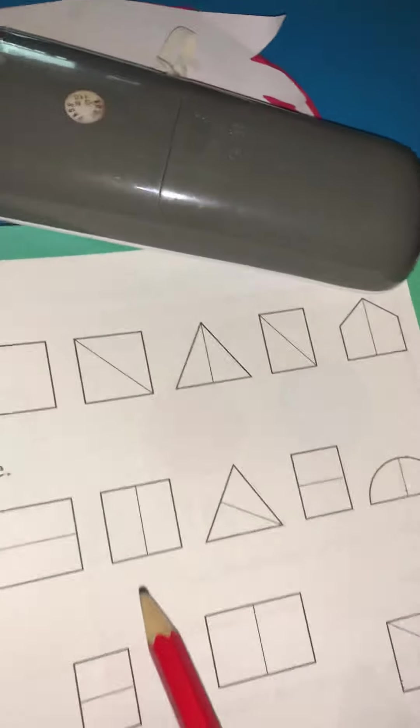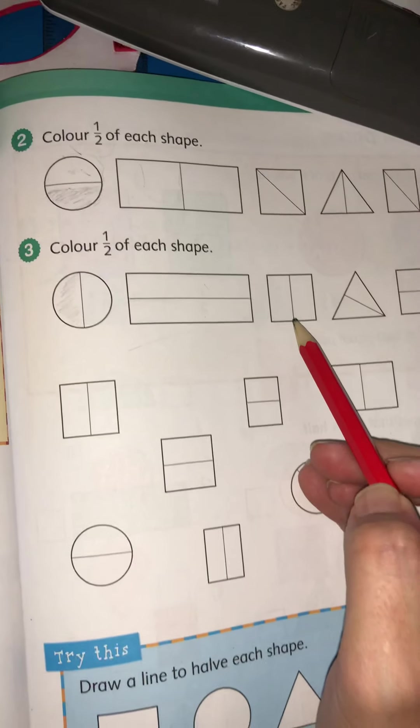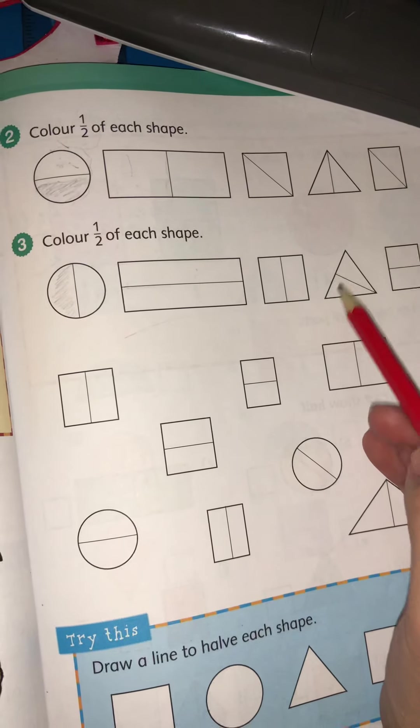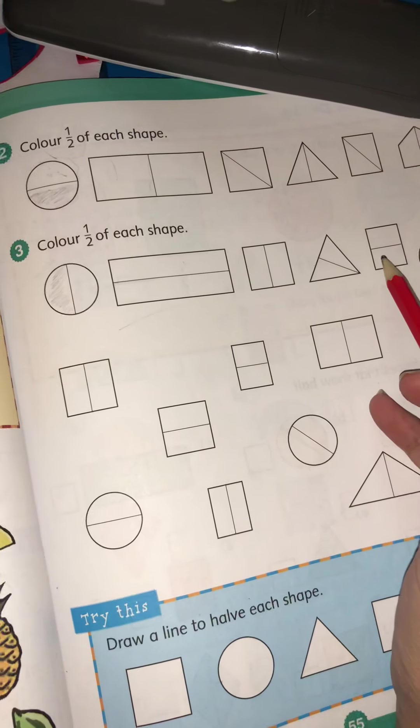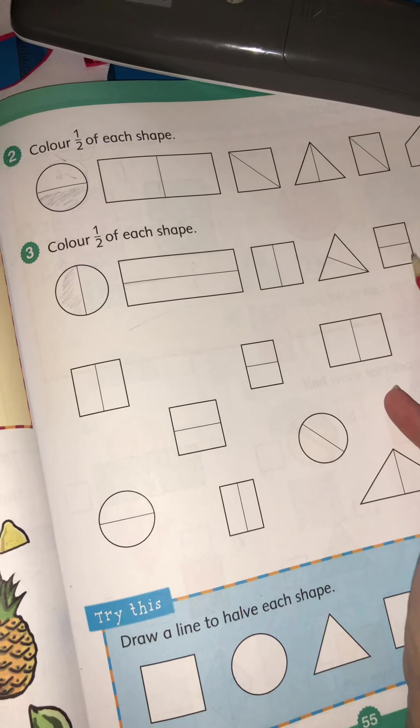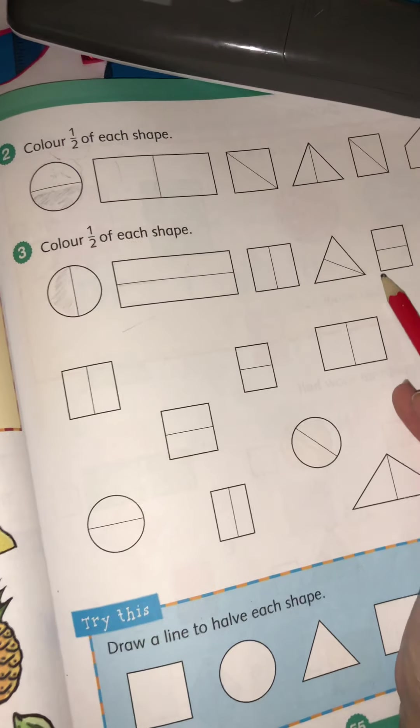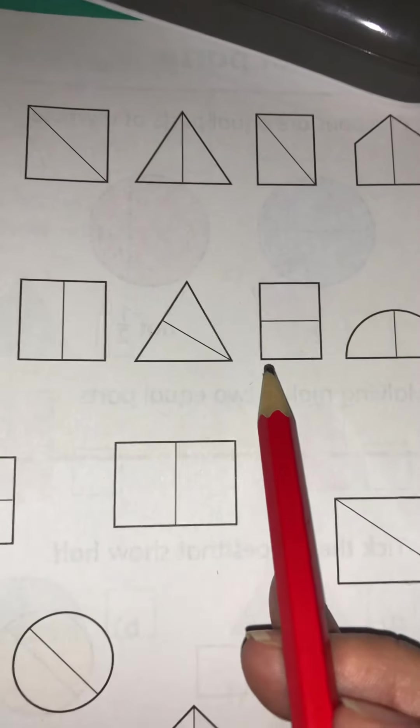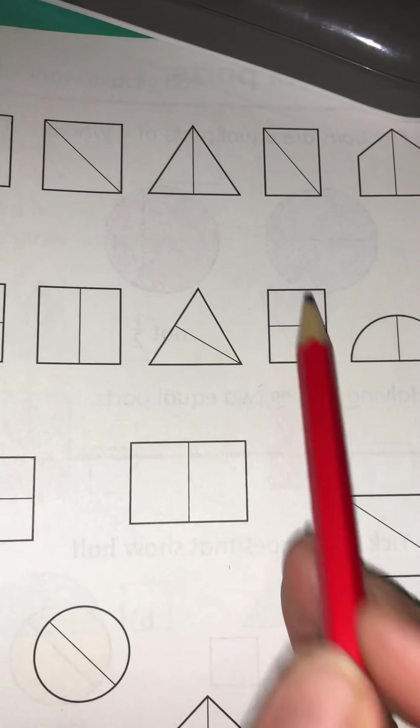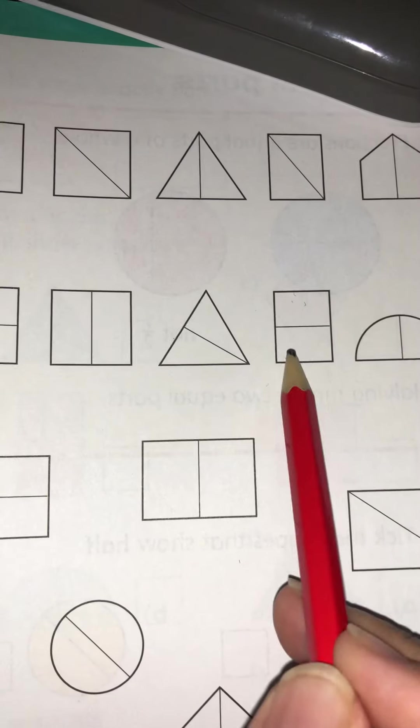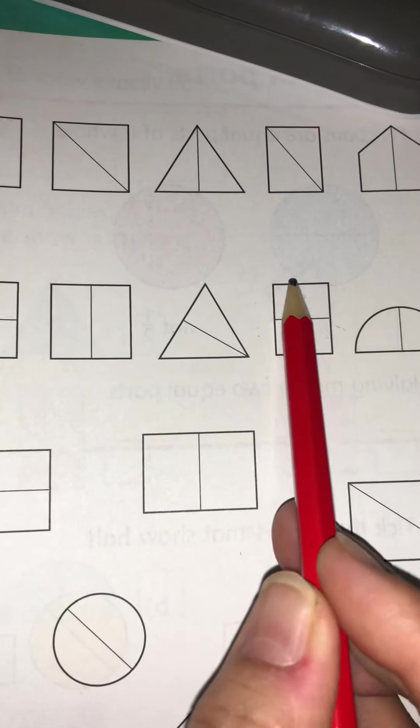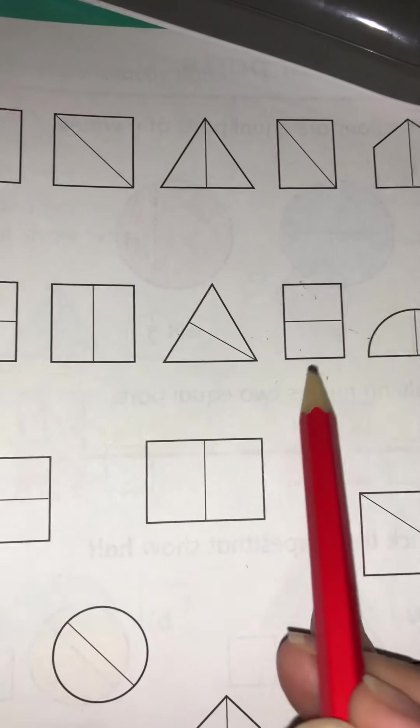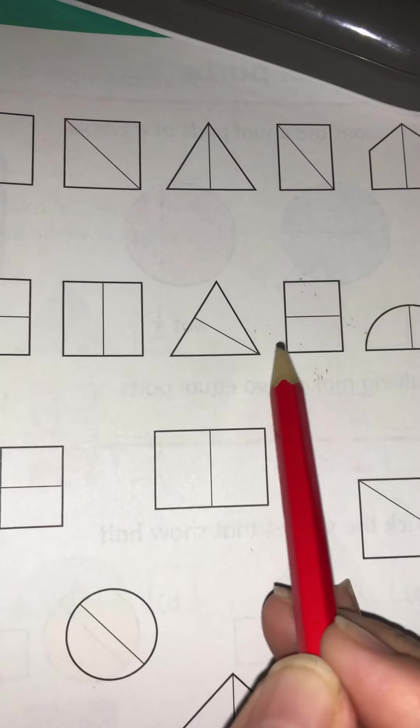This is a square. They have divided into two or half. This is a triangle and this is another square. Is it a square or rectangle? Well, it's a rectangle because the two sides are, these two sides are equal and these two sides are equal, and four sides are not equal to each other. So this is not a square, this is a rectangle. And this is a semi-circle.